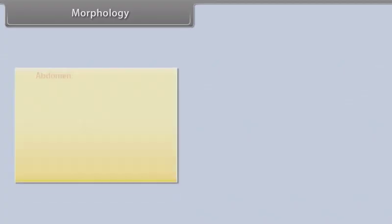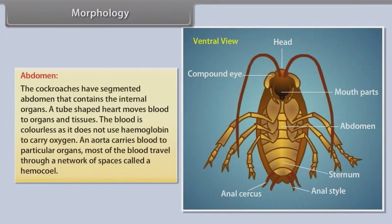Cockroaches have a segmented abdomen that contains the internal organs. A tube-shaped heart moves blood to organs and tissues. The blood is colourless as it does not use haemoglobin to carry oxygen. An aorta carries blood to particular organs, and most of the blood travels through a network of spaces called a haemocoele.